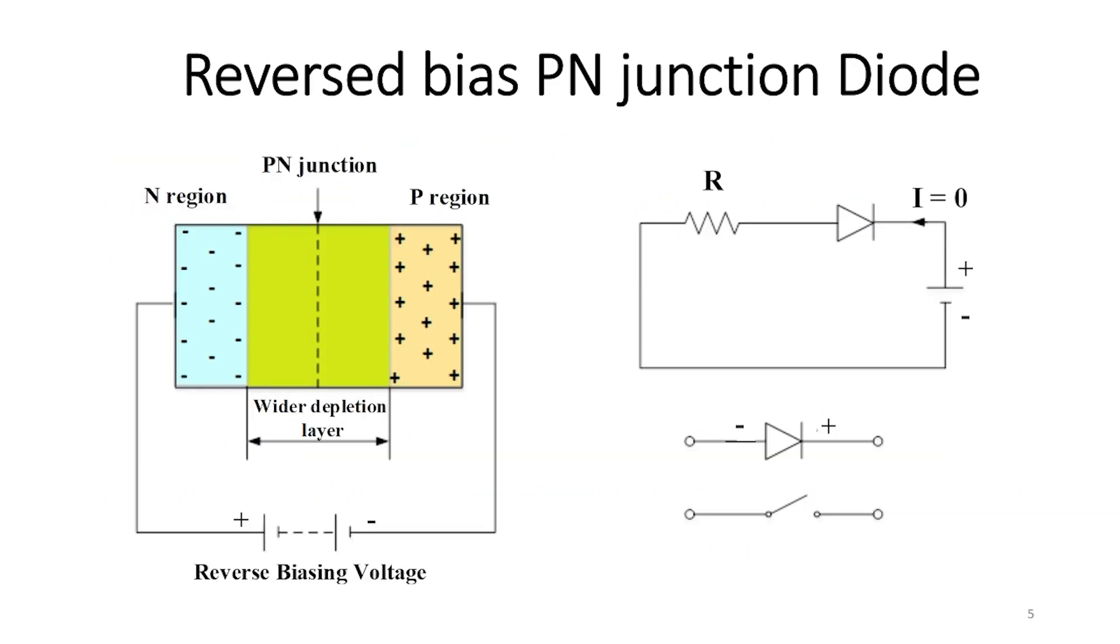We can see the diode symbol, that the plus side of the battery is connected to the cathode of the diode, and the vertical line presents the barrier that blocks the current from flowing in the circuit.